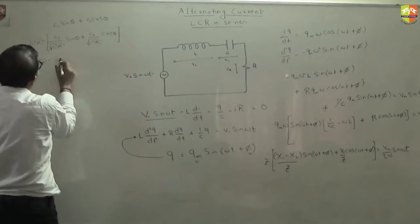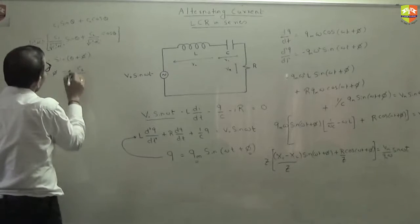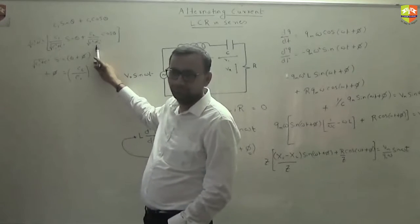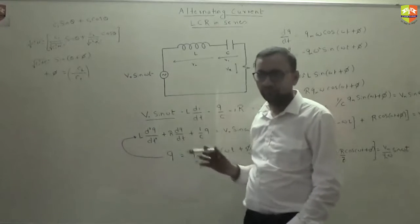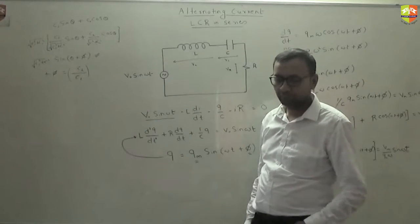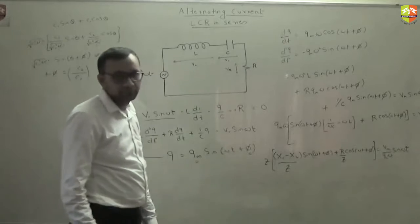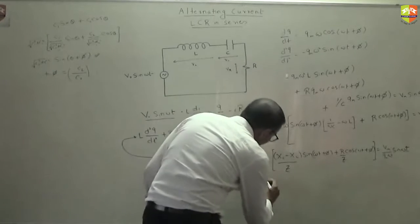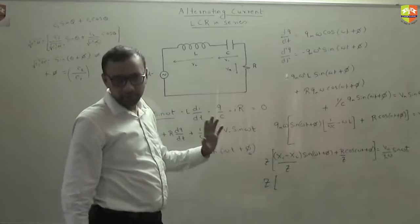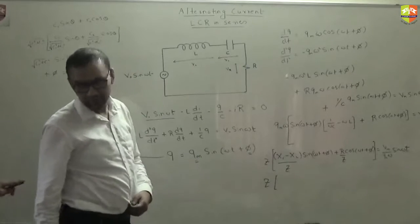This will be equal to root c1 square plus c2 square times sin theta plus phi, where tan of phi is equal to c2 by c1. This you assume as cos phi, this automatically becomes sin phi. It's a common trick. So this will let you write in a simpler manner. Similarly here, Z is root over this square plus that square. So I can write down this as Z into... Is it very overwhelming? Are you able to handle it? Any doubt? You let me know. Slow down.